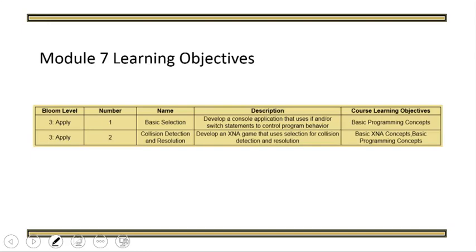This is our last lecture for Module 7, where we've been talking about the selection control structure. Over the last two lectures, we've talked about the different variants of IF statements and about switch statements, and how we use those to implement the selection control structure, how we make decisions in our program. In this lecture, we're actually going to look in detail at how selection works when we actually implement games.